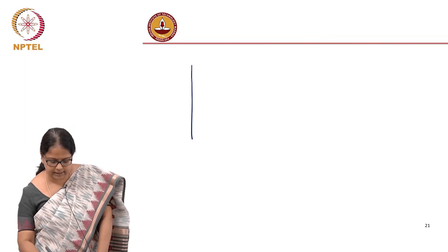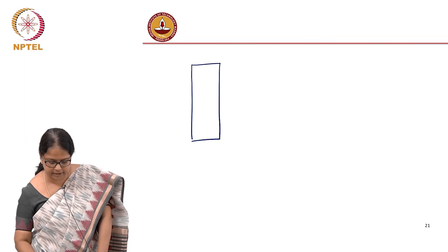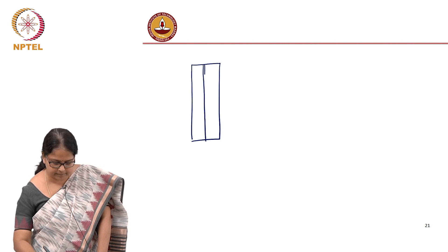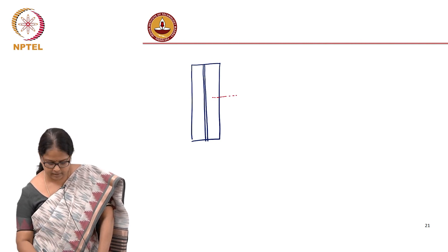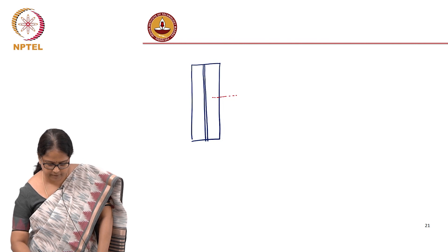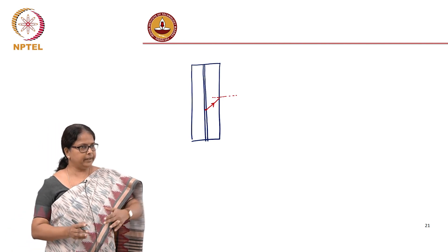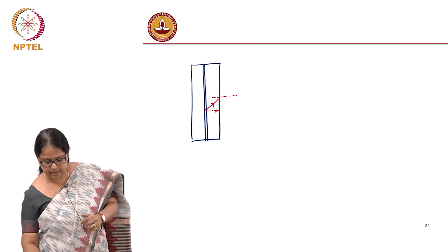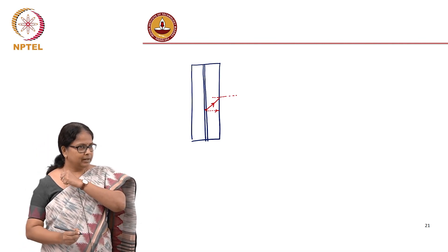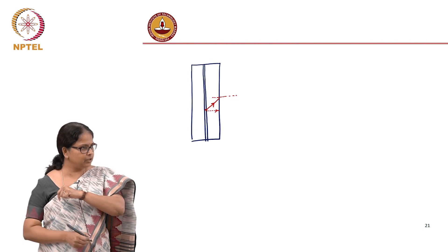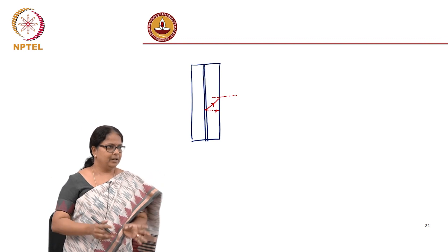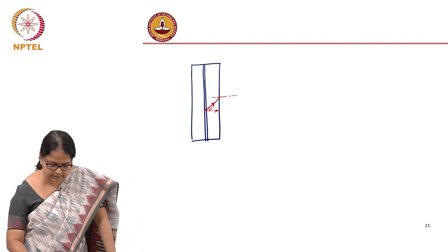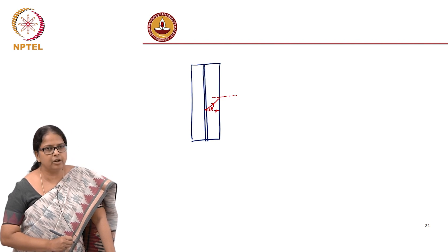What is happening in total internal reflection? Let us say this is our P-N junction — this is the junction region and this is the normal to the interface. You have emission happening from here and what we talked about was only the case where emission is happening normal to the interface. But emission can happen in all directions, so let us think of an emission where it is at an angle theta with respect to the normal to the interface.